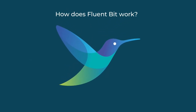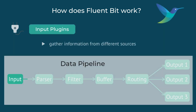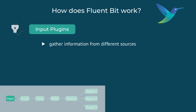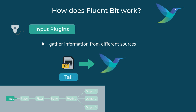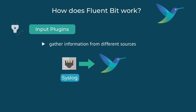So how does FluentBit work? FluentBit uses input plugins to read the logs from the data sources. For example, if you need to read log files, you need a plugin to read from log files. If you're going to receive messages over TCP, you need an input plugin that listens for messages over TCP. FluentBit supports many different input sources.